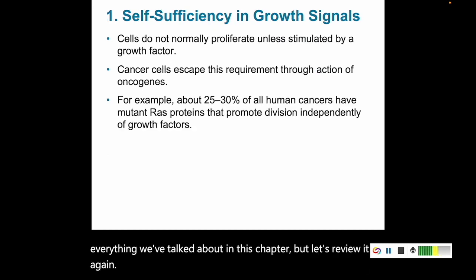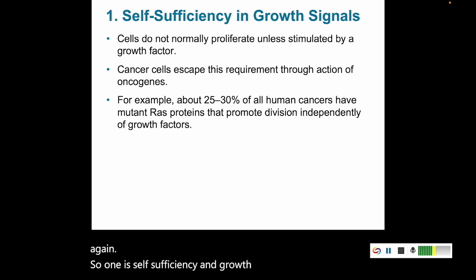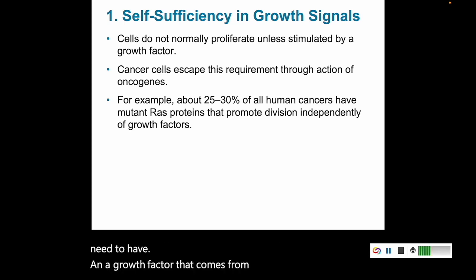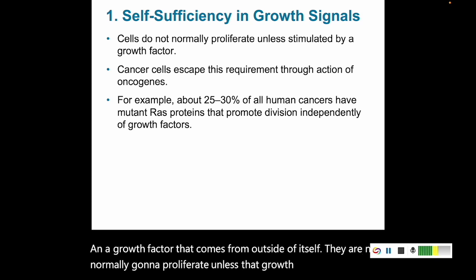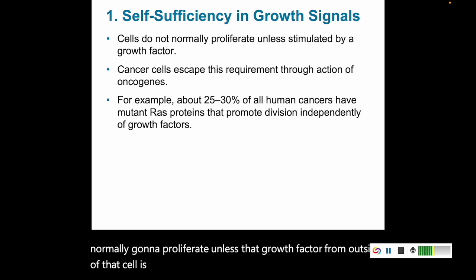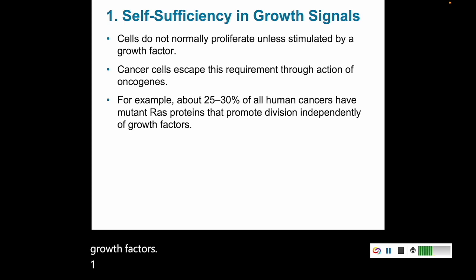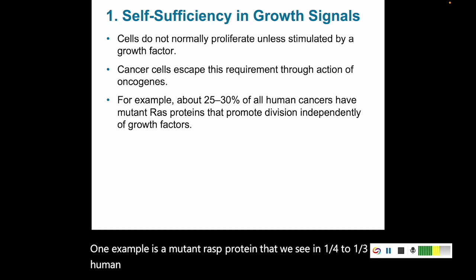The first hallmark is self-sufficiency in growth signals. Normal healthy cells need a growth factor from outside of themselves — they're not normally going to proliferate unless that external growth factor is provided. Cancer cells can activate oncogenes and avoid the need for growth factors. One example is a mutant RAS protein, seen in a quarter to a third of human cancers, that promotes cell division without growth factors present.